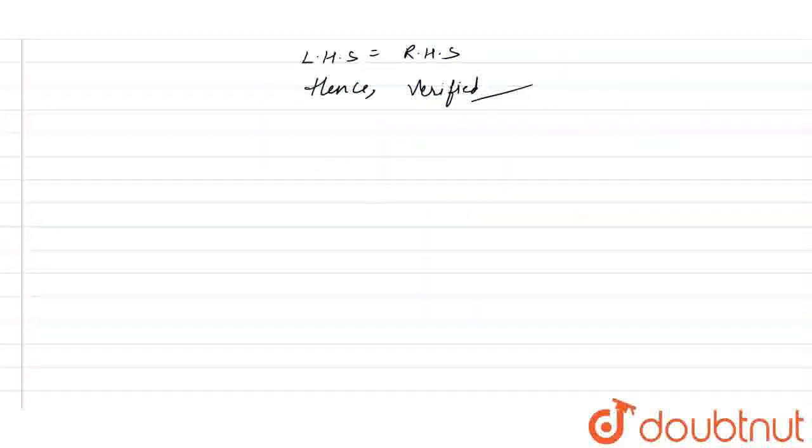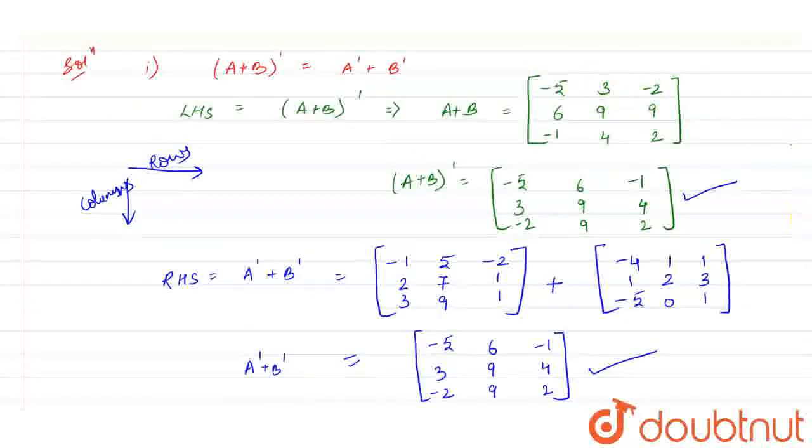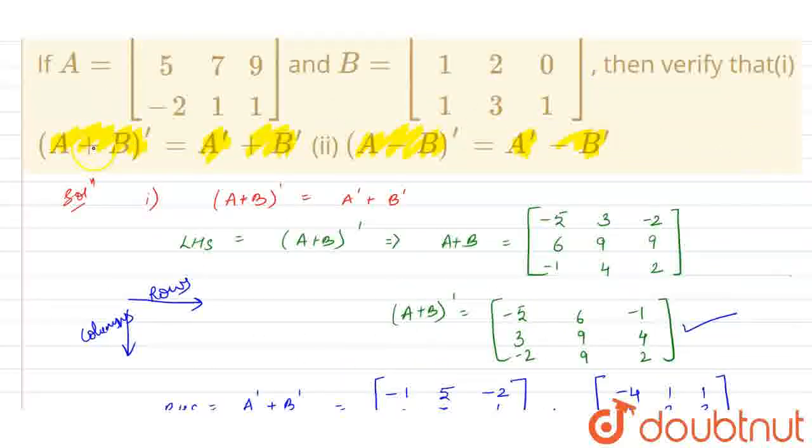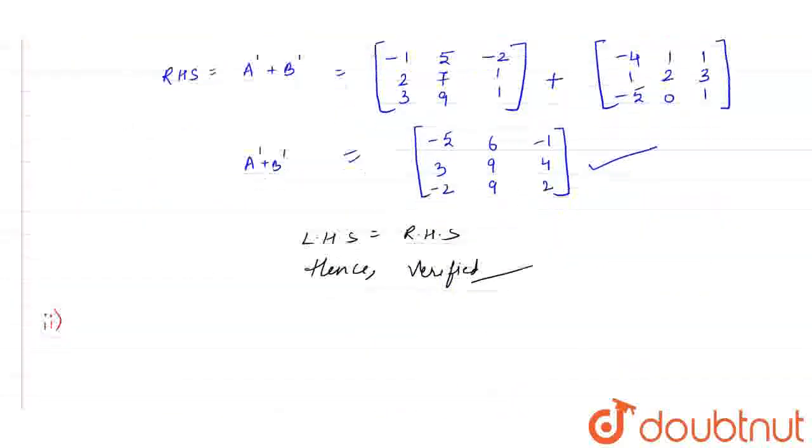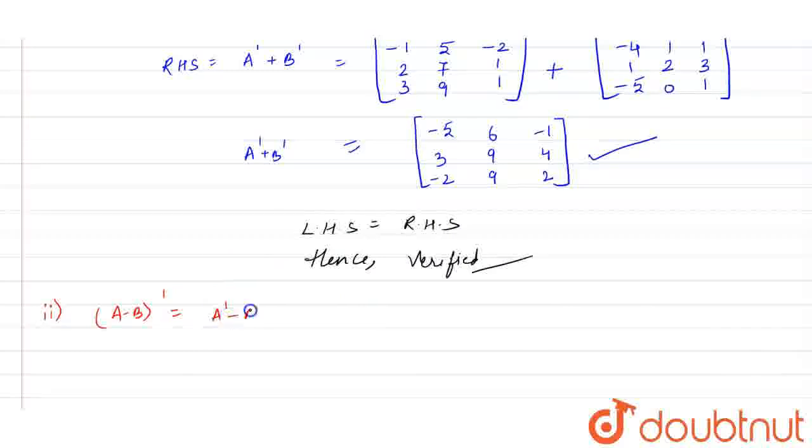Now for the second part, what was our second part? It was the same but the signs were changed. That means here we were checking it for addition and here we will check it for subtraction. A minus B whole transpose equals A transpose minus B transpose. Alright, so let us take here also the LHS first. A minus B whole transpose. So first of all, we will calculate A minus B.